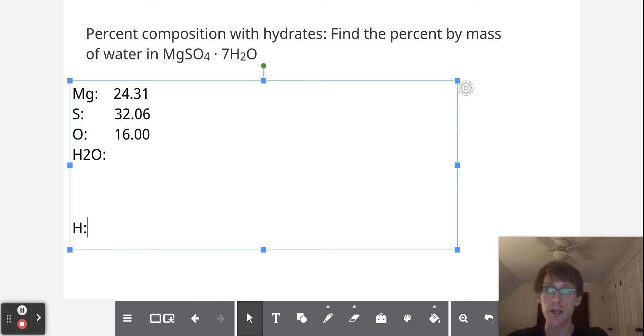Now, water, I'm going to do out separately. We have H, which is 1.01 times 2 equals 2.02. And for O, it's 16.00 times 1 is equal to 16.00. So the sum of two hydrogens and one oxygen is 18.02 grams per mole. So my mass of water I'm going to put in here is 18.02.